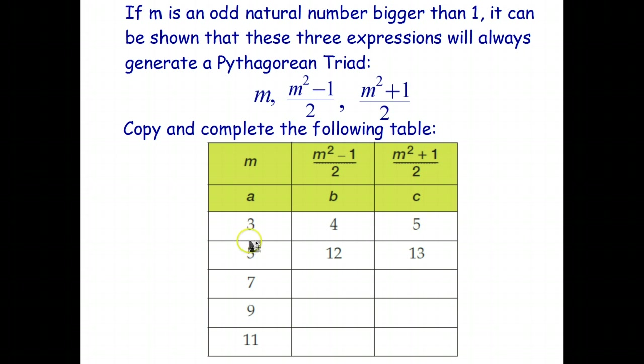If m is equal to 5, so we have 5 as our smallest number, 5 squared is 25, minus 1 is 24, divide 2, gives us 12. And 5 squared is 25, plus 1 is 26, divide 2 gives us 13.